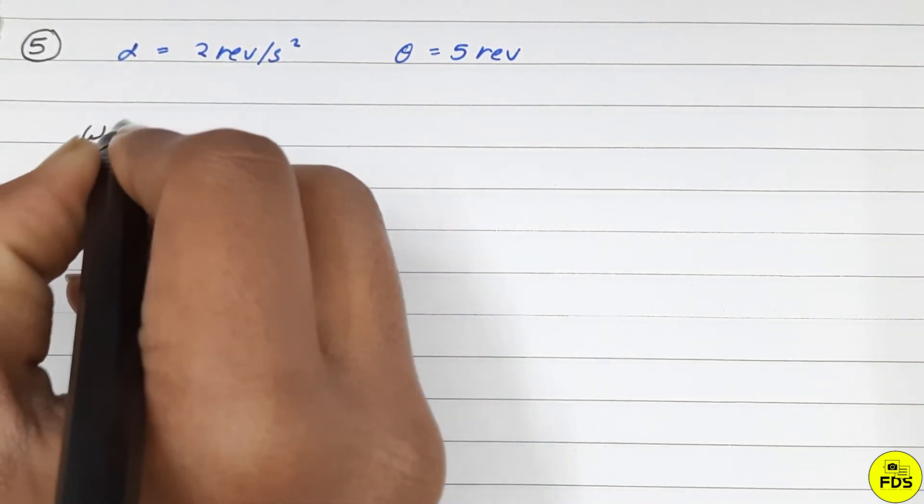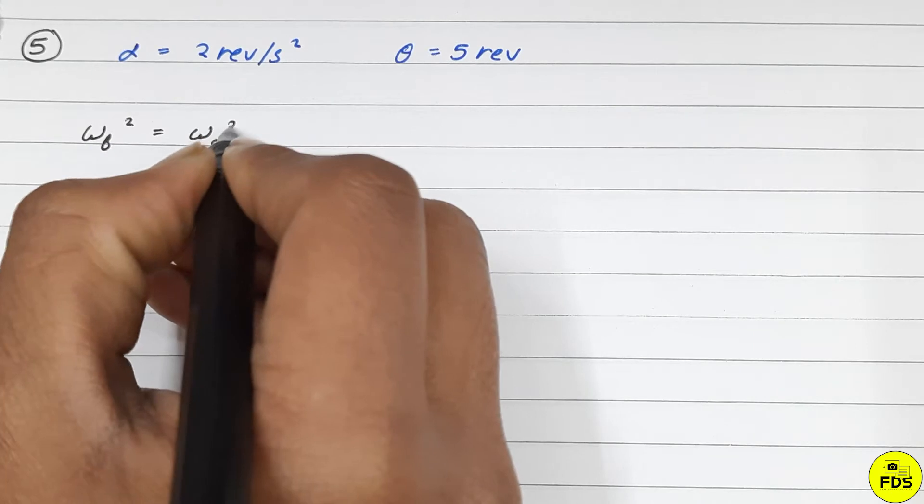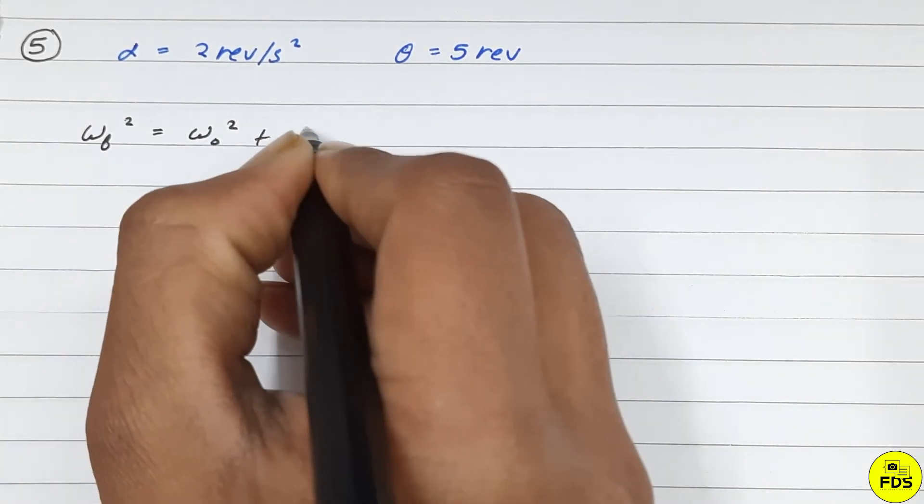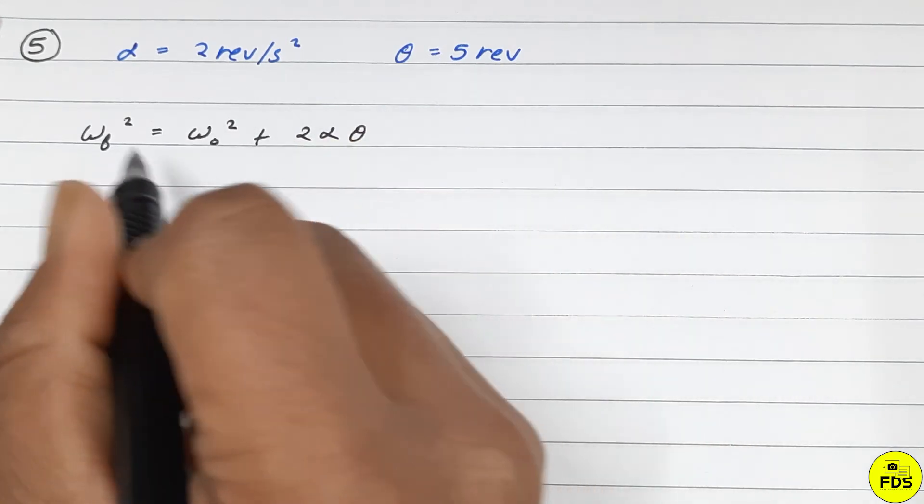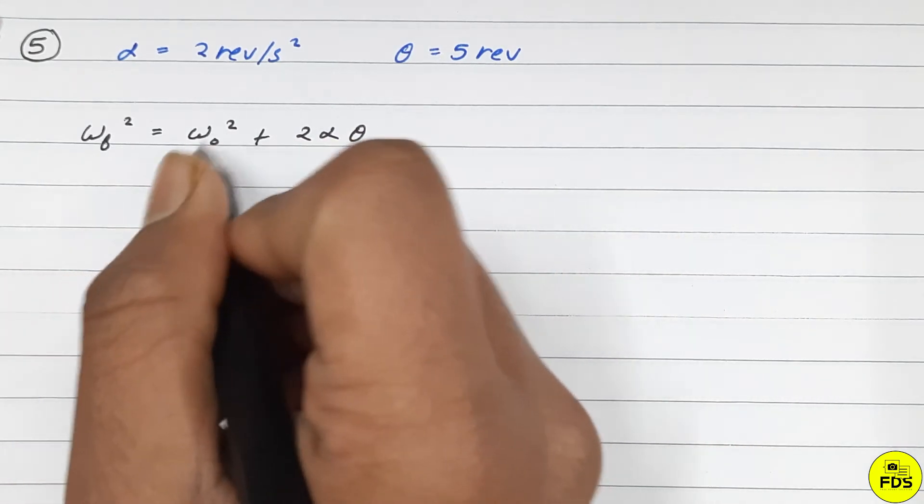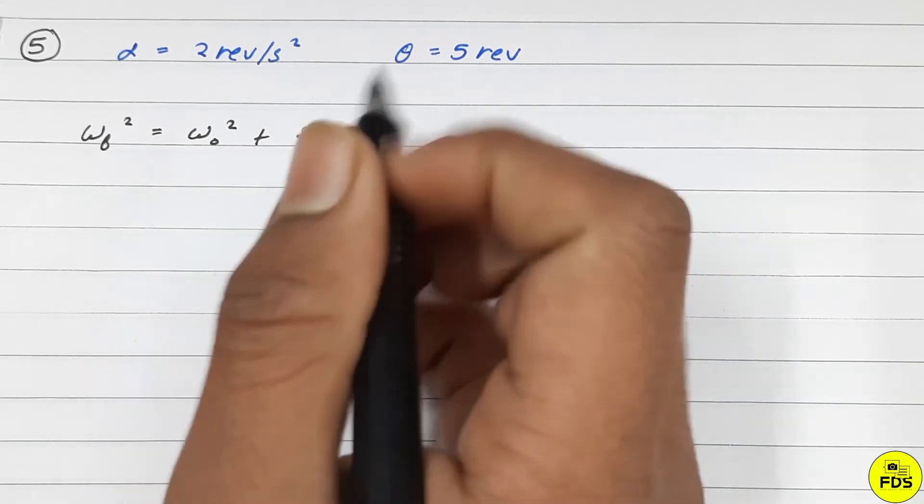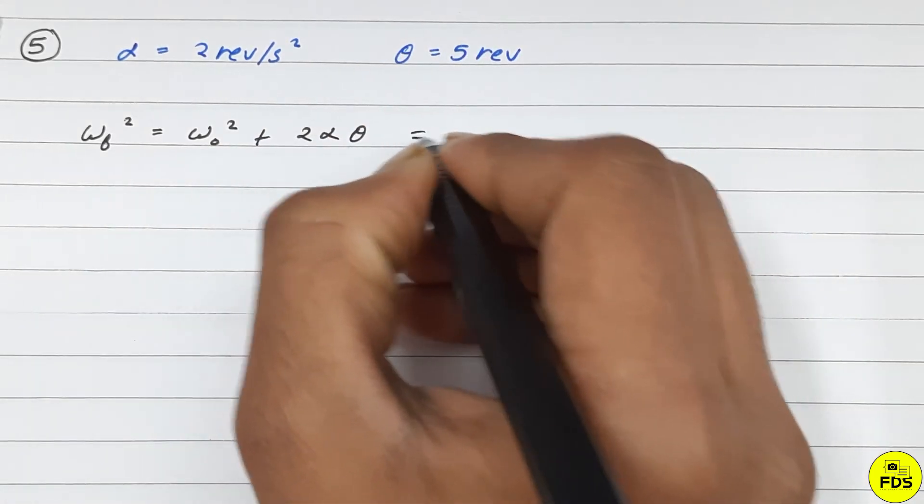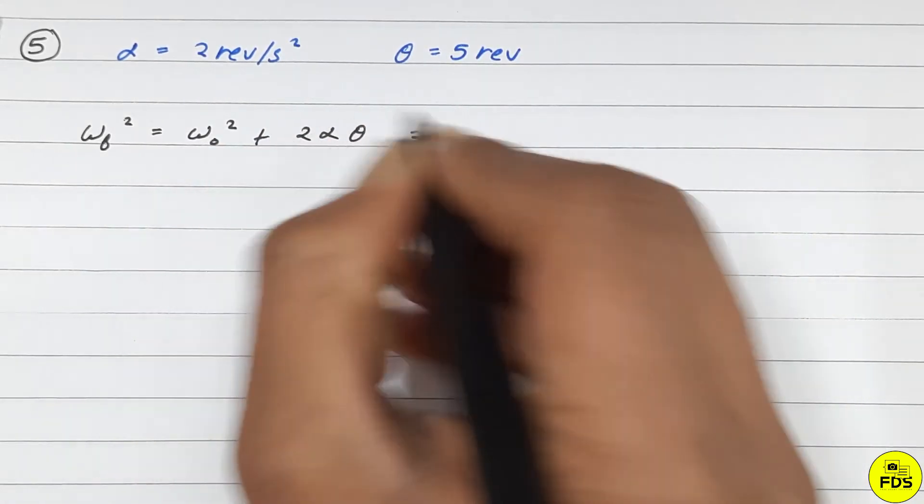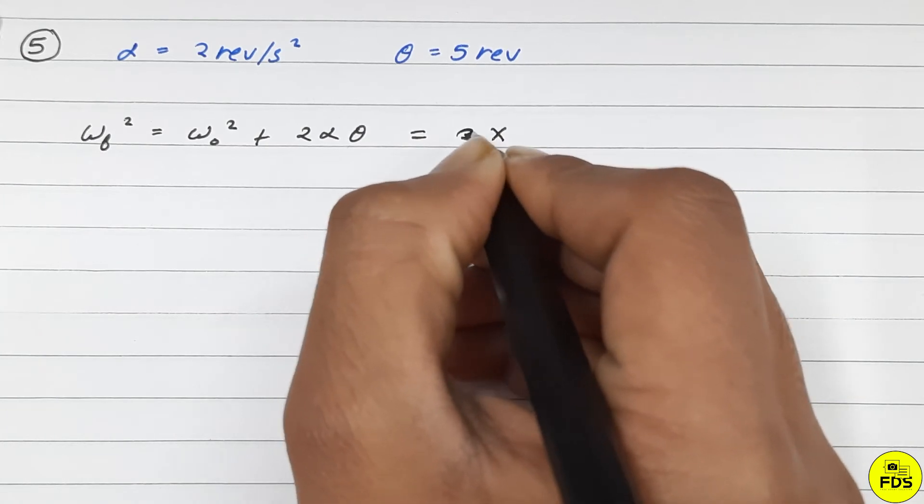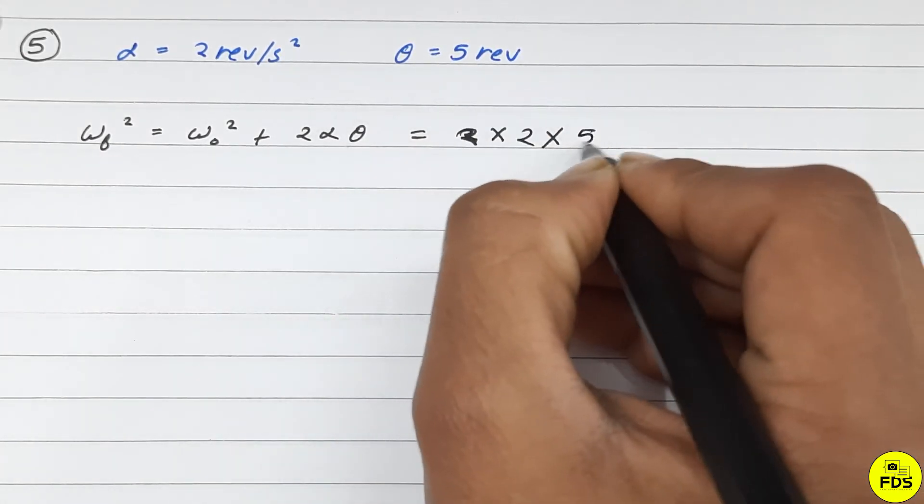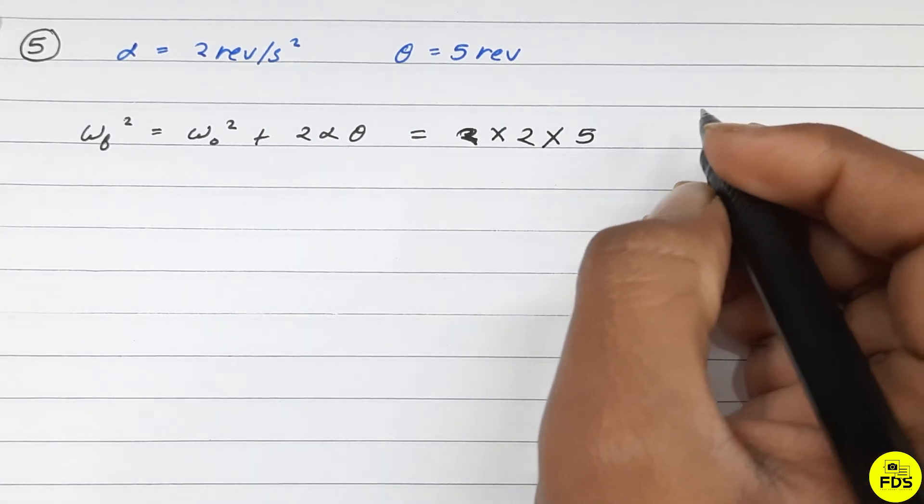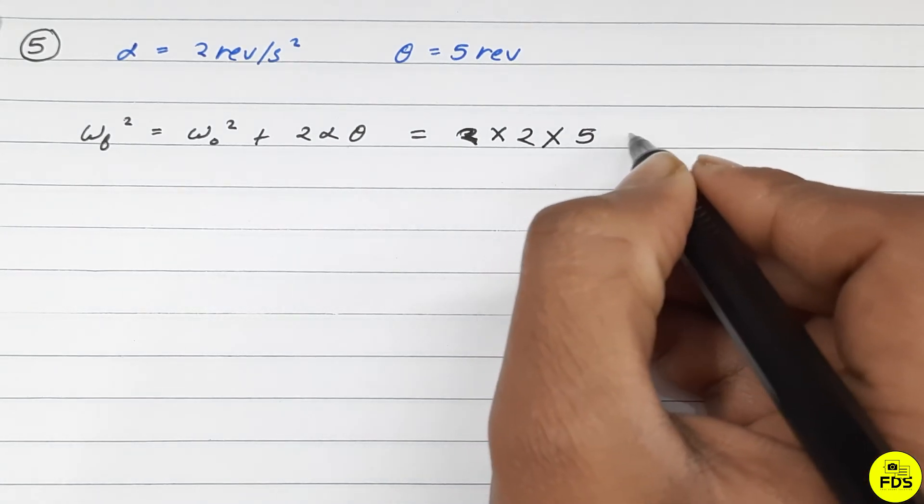This is our equation. Here we calculate the value: 2 times 2 times 5.